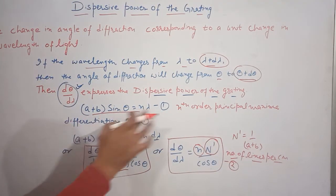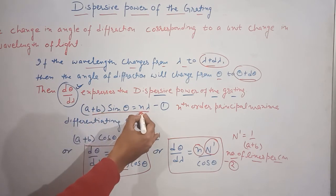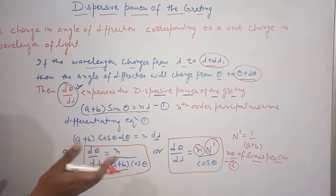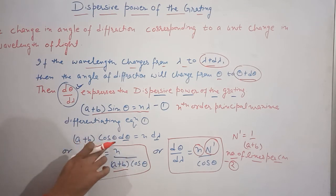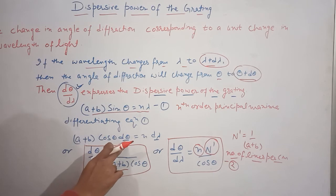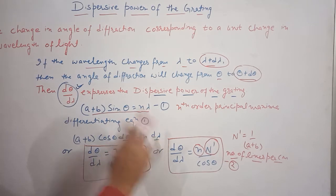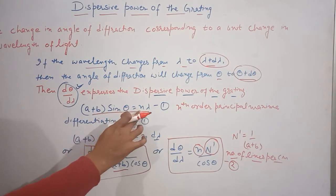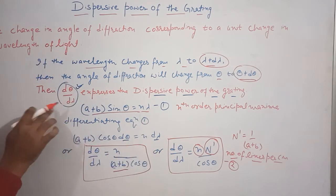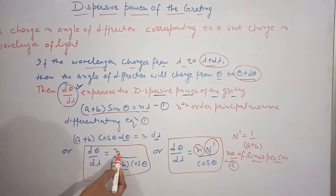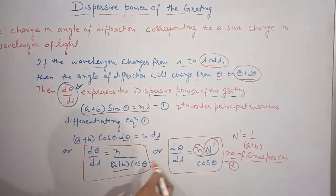We differentiate equation 1. The variable terms give us: (a + b) cos θ · dθ = n · dλ. Rearranging, we get d-theta by d-lambda equal to n upon (a + b) cos theta.